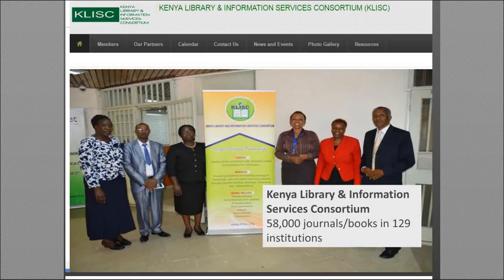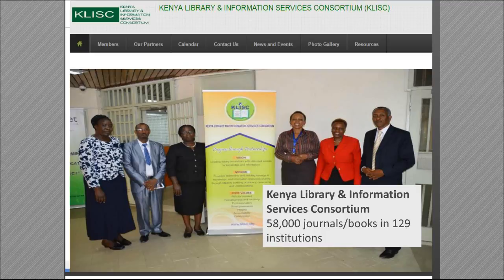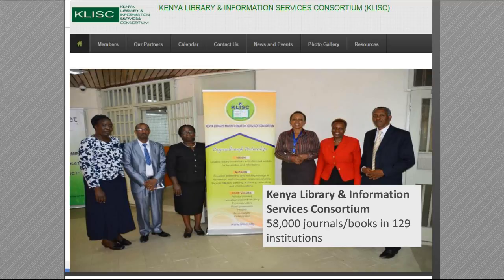One example is the work we've done with the Kenya Library Information Services Consortium, where we've provided access to over 58,000 journals for more than 129 institutions in Kenya. These figures cover subscription journals — paid content — not including open access materials, which is on top of that. Despite this work, we realize researchers may not know the material is available, so we're working to increase the visibility of access.